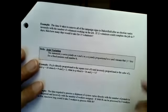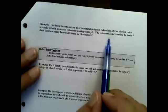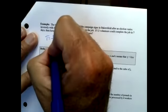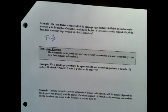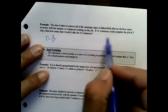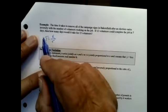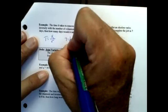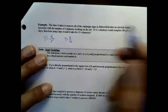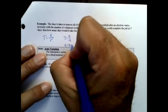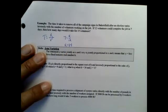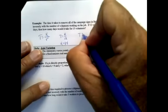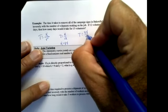So we have here, time it takes to remove all the campaign signs after an election. So time varies inversely with the number of volunteers. Well that makes sense. The more people there are to pick up the signs, the less time it's going to take. If 12 volunteers can complete the job in seven days, 7 equals k over 12. I'm thinking I get a k equal to 84. Don't know if you all got to that or not. So now I have a new equation: 84 over the number of volunteers.